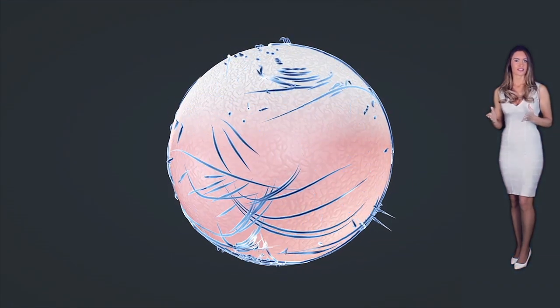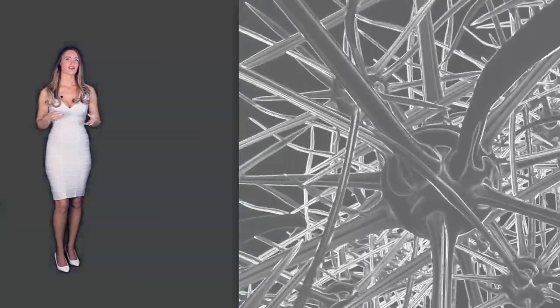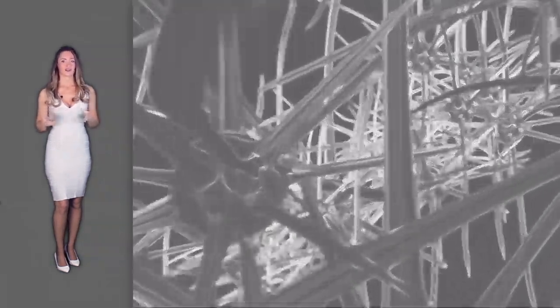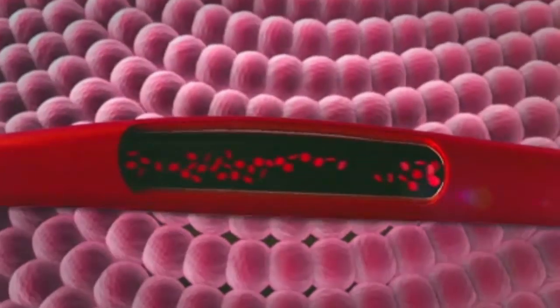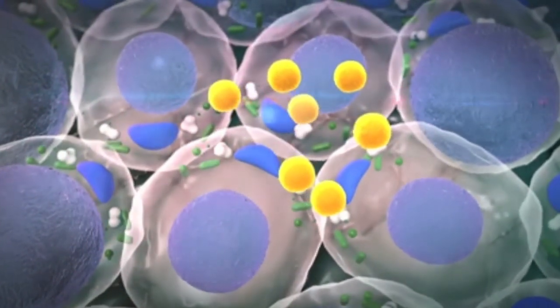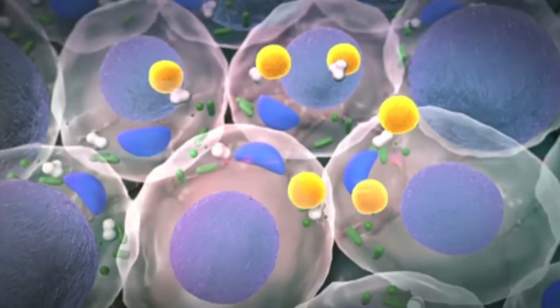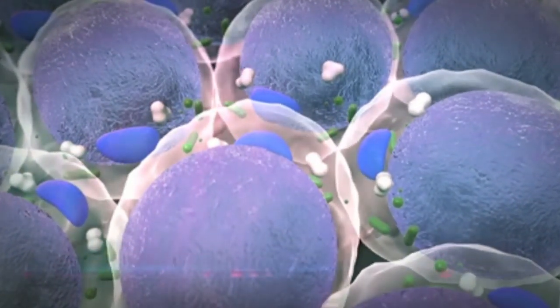Chondrocytes are found inside the lacunae chambers inside the matrix. A structure laden with cartilage is usually housed inside a connective tissue covering referred to as the perichondrium. Cartilages are not directly supplied with blood, but blood vessels are present in the connective tissue surrounding the cartilage. Diffusion is the technique used to obtain nutrients from the vessels and the perichondrium by cartilage cells near the connective tissue covering. This is why cartilage is known to heal slowly.